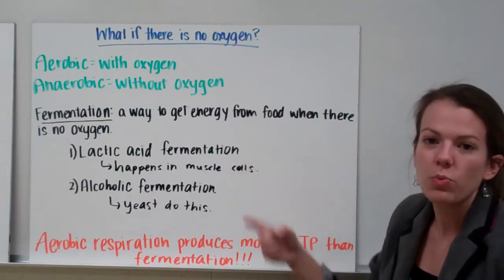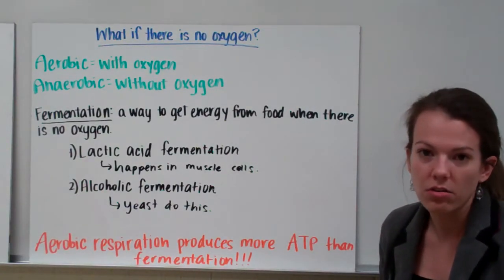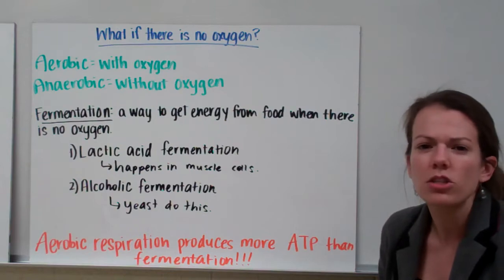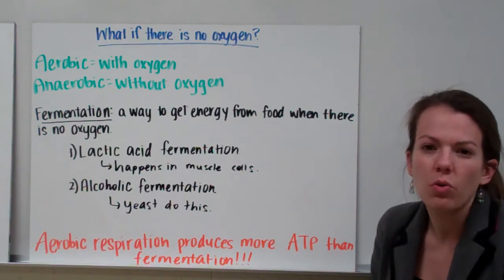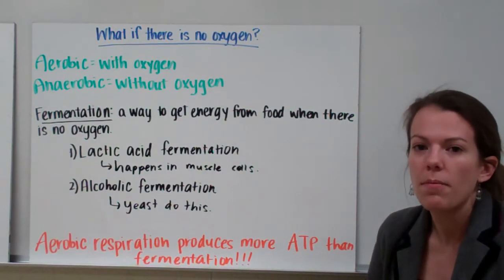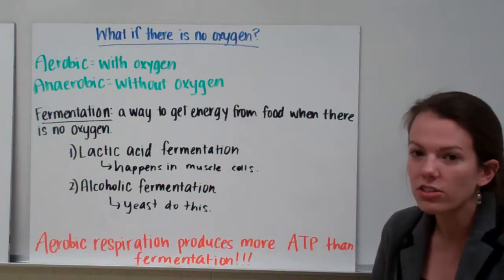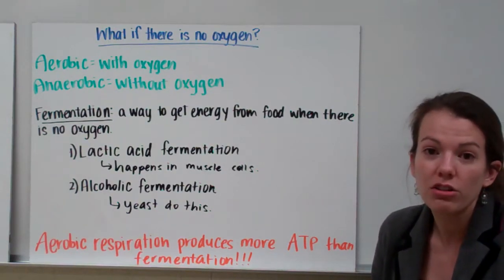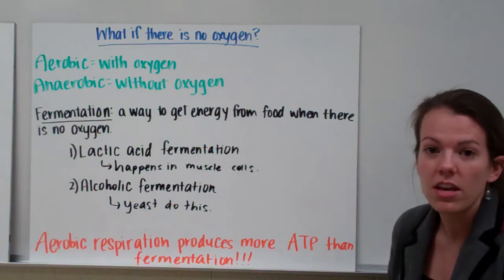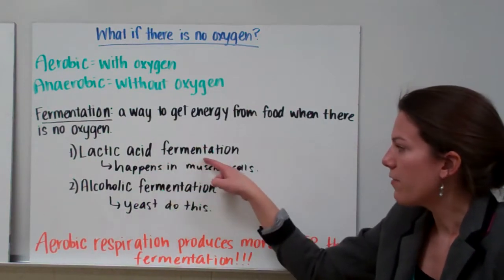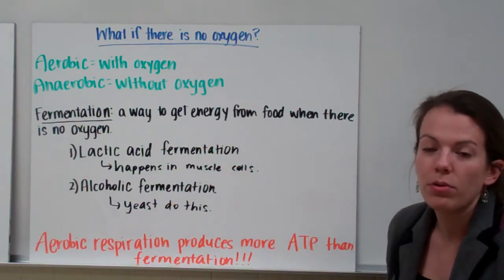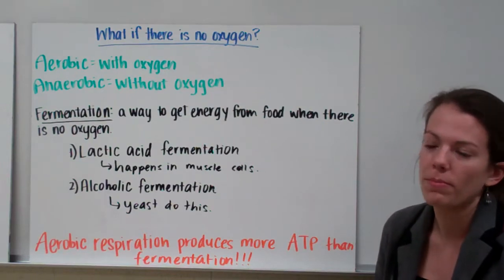Lactic acid fermentation is what you experience when you're exercising really hard and your muscles begin to burn, or if you're really sore after you've exercised. This happens because your muscles aren't getting quite enough oxygen to get enough energy to power those muscle cells. So it starts to do lactic acid fermentation, which produces lactic acid that begins to burn your muscles.